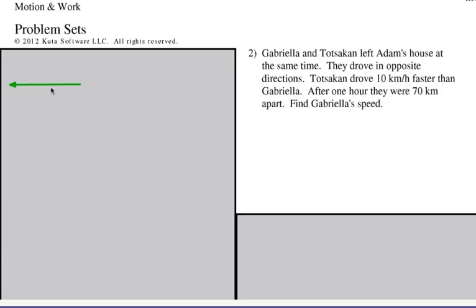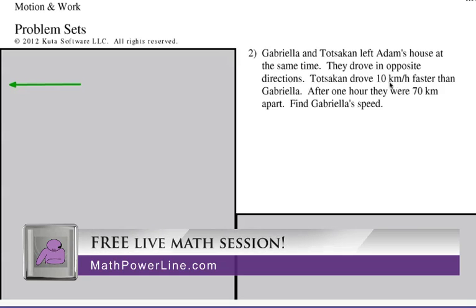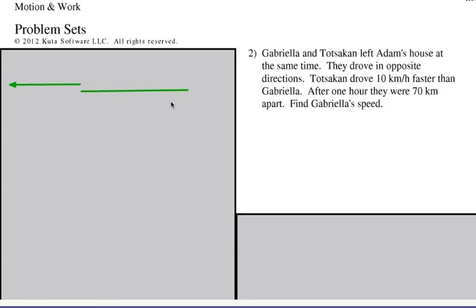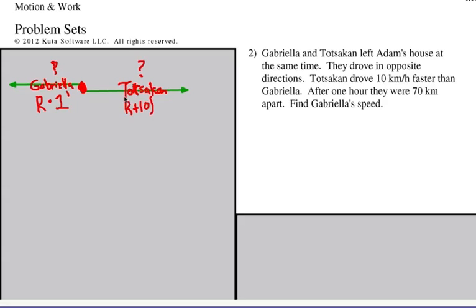Let's make this arrow represent where Gabriela travels — she's going this direction and we don't know how far. Tokasan is going in the opposite direction. We'll call her rate R, and she drove for one hour, so R times one. His rate was 10 kilometers per hour faster, so we call it R plus 10. His rate is R plus 10, and he also drove for one hour.